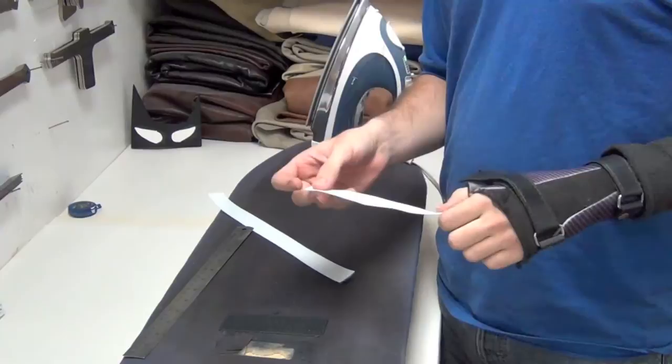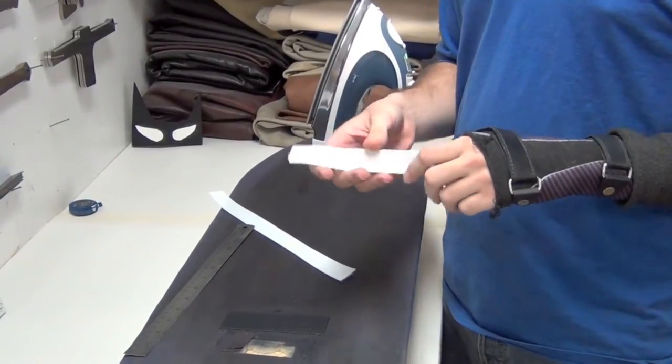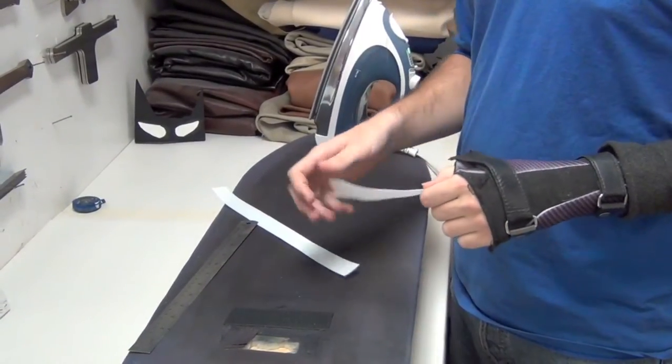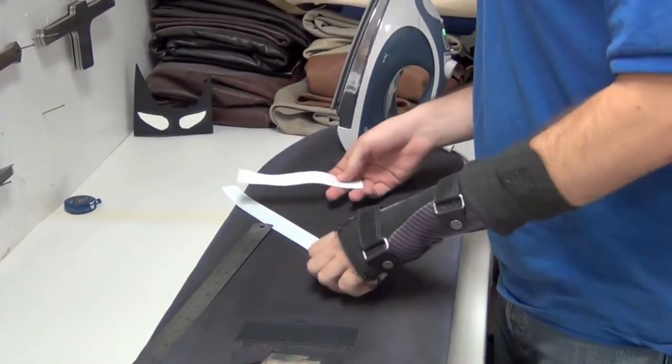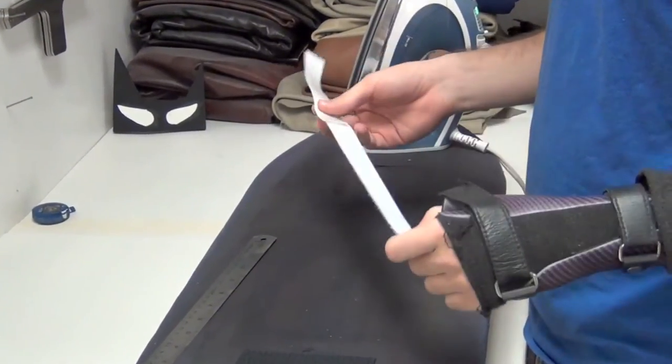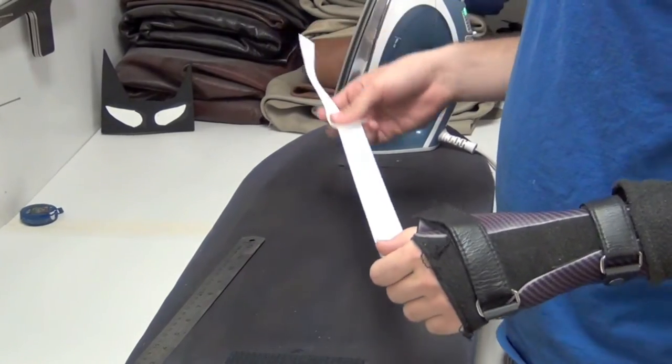You can also transfer onto a Dacron strap, but again, before you sew anything, transfer onto it, then sew. You're going to melt your stitches, you're going to have a bad time. So I guess we'll go ahead and show you how to transfer onto loop velcro first.